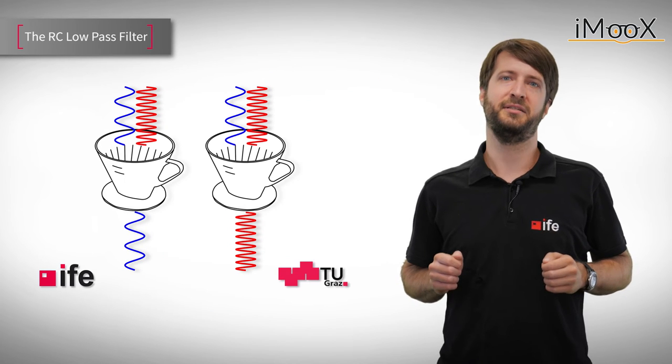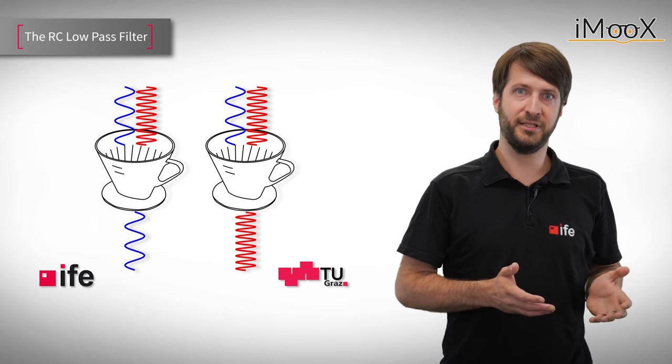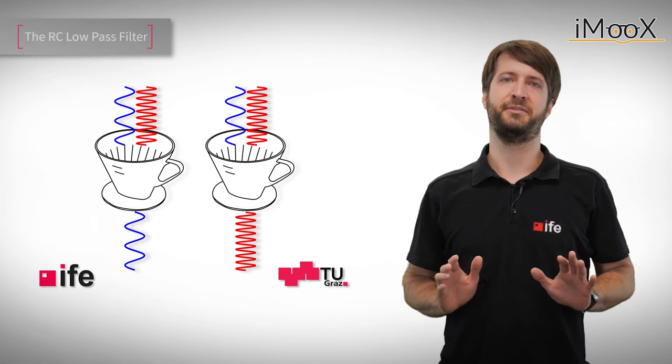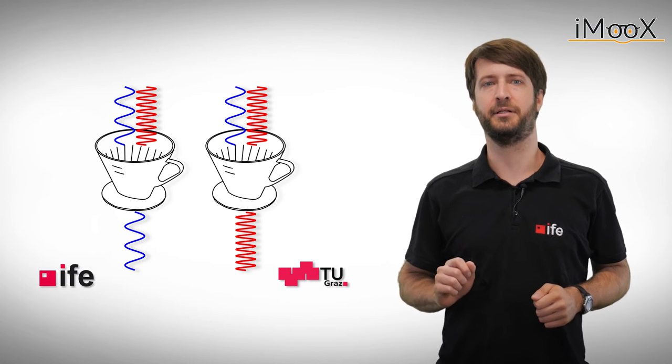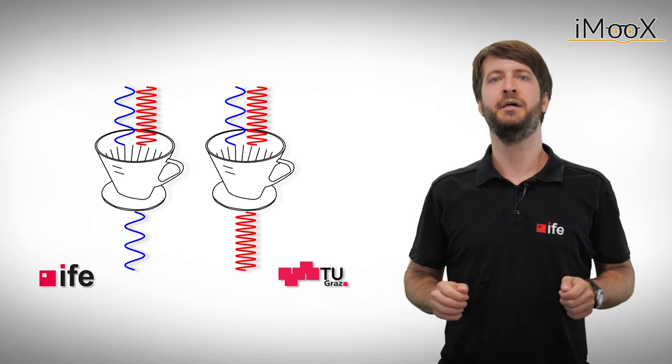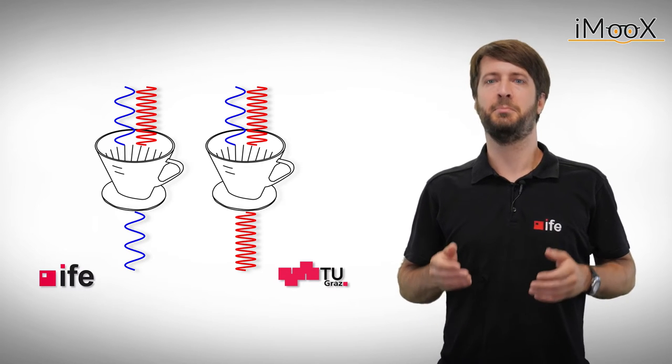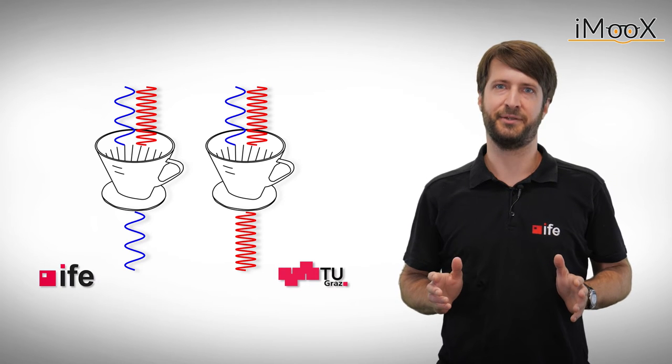Notice that until now all AC signals can either pass through our filter or are simply stopped by it. There are filters though which can actively amplify an AC signal. We will talk about those so-called active filters in one of our next videos. But today, we only want to focus on how to build passive filters.